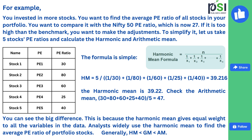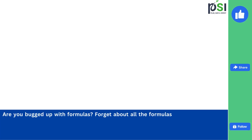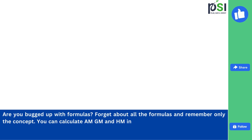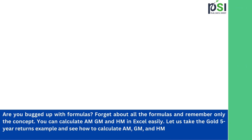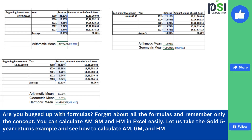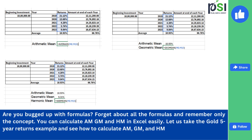Analysts widely use harmonic mean to find the average PE ratio of portfolio stocks. Generally, harmonic mean is lesser than geometric mean, and geometric mean is lesser than arithmetic mean. You can calculate arithmetic mean, geometric mean, and harmonic mean in Excel easily. Let us take the gold 5-year returns example and see how to calculate all three.